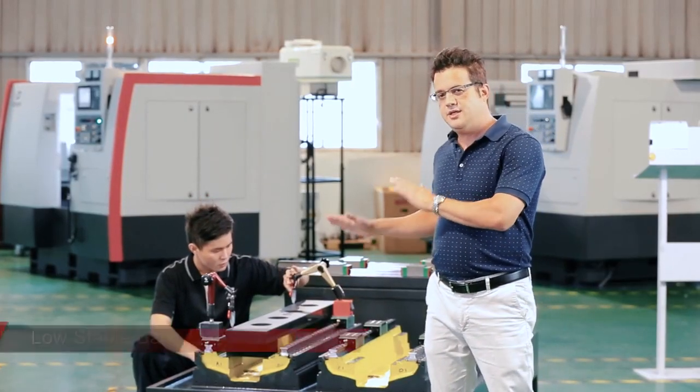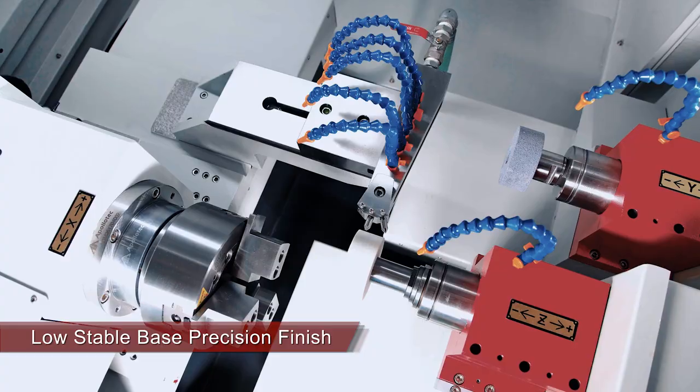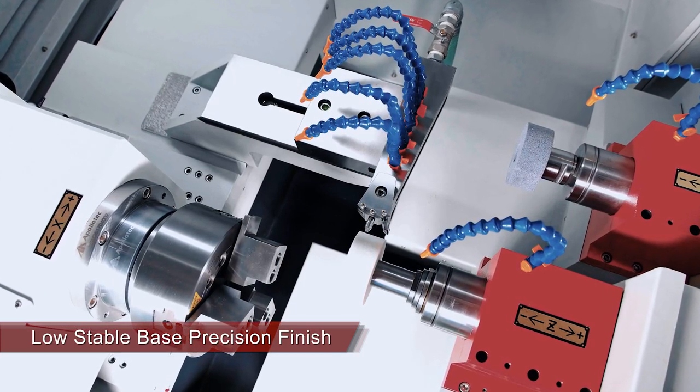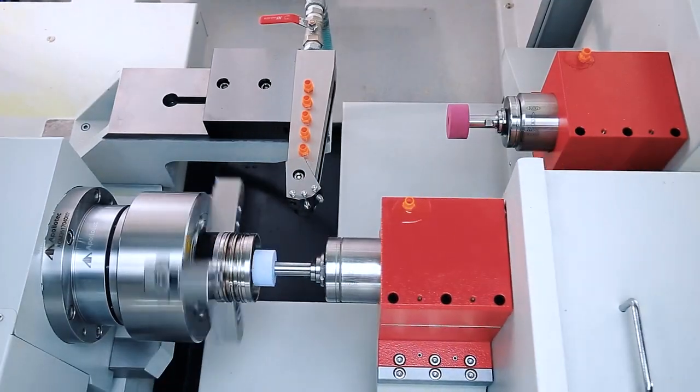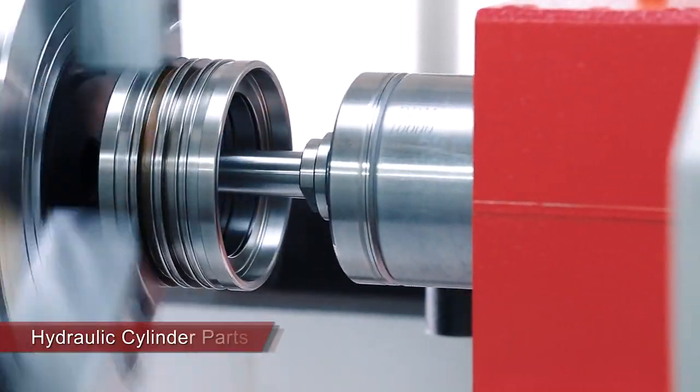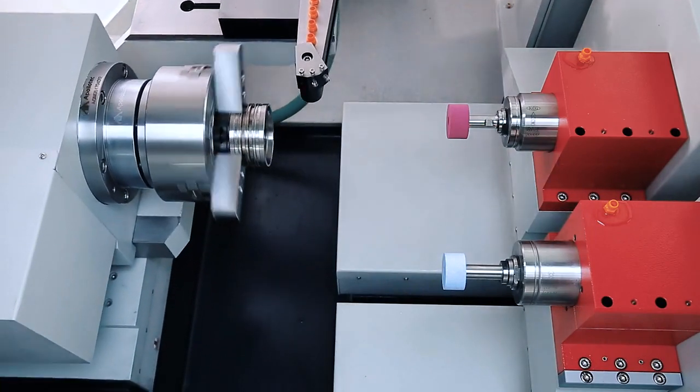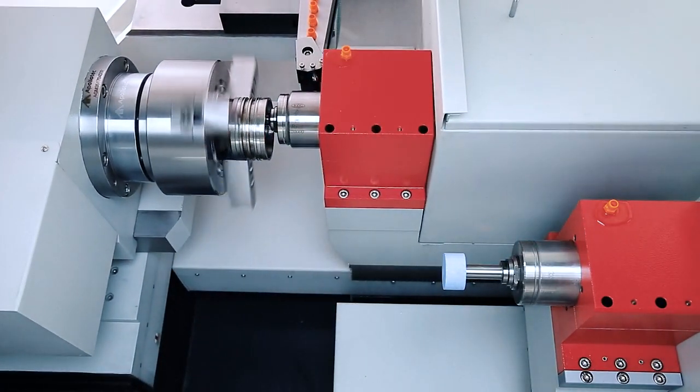As you can see here, this is the EGM structure. You can see it's really low, so that means it has a very low center of gravity. Now, what that relates to is how good of a surface quality you can maintain with this type of stable base.